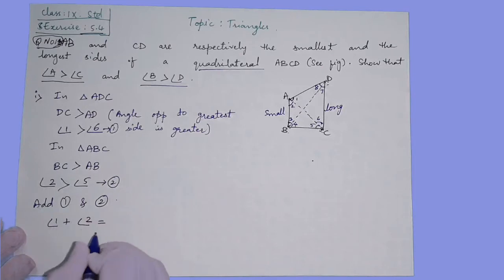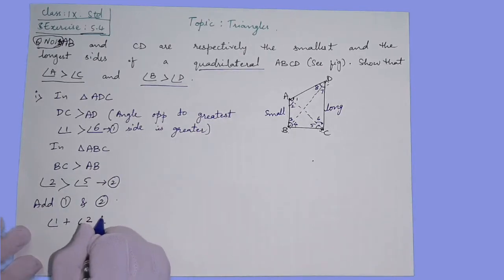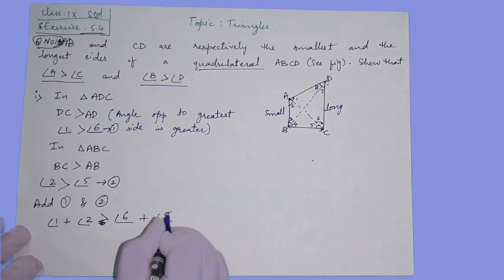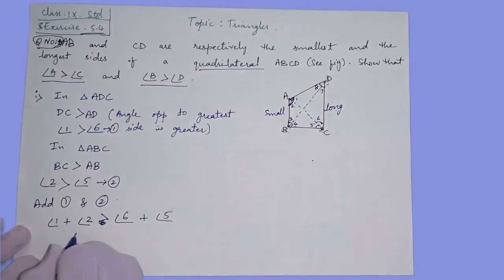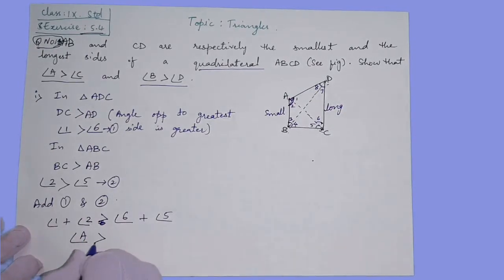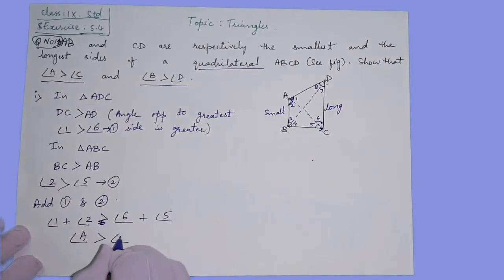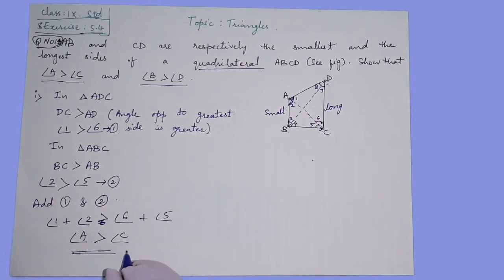The symbol is greater than. Angle 1 and 2 is greater than 6 plus 5. Angle 1 and 2 together form angle A. Angle A is greater than angle C, which is your first result.